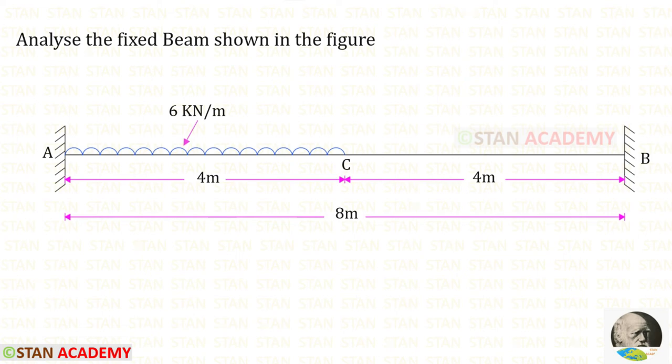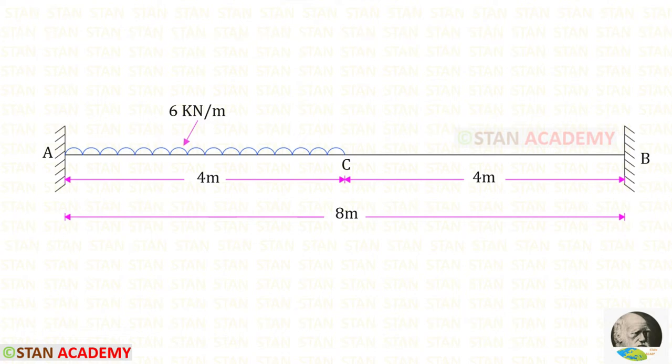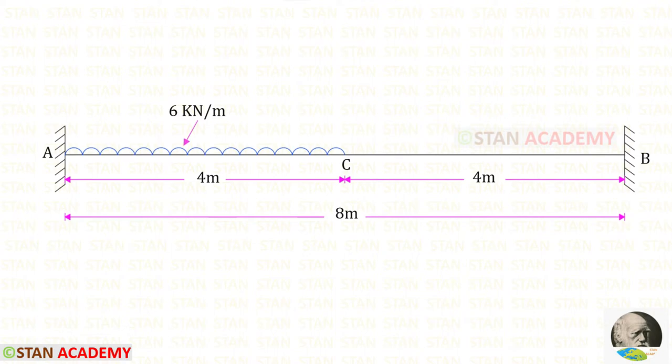Hello everyone, today we are going to analyze this fixed beam. In this beam we have a uniformly distributed load of 6 kilo newton per meter, acting on the left half span. The total length of the beam is 8 meters. Now we are going to find the fixed end moments MA and MB.